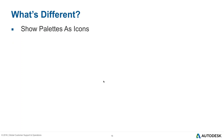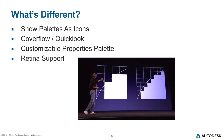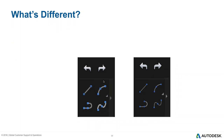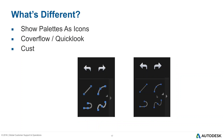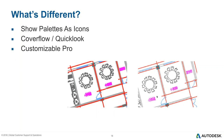We also have things the Windows version doesn't have: show palettes as icons, cover flow and quick look, and a customizable properties palette. We were also the first to have retina support. AutoCAD for Windows 2017 is about 60-80% 4K friendly, but this really started on the Mac side — we've had it for three or four years. Retina means at normal viewing distance the human eye can't distinguish pixels, giving us a very smooth interface and crisper drawings on 4K and 5K iMacs.